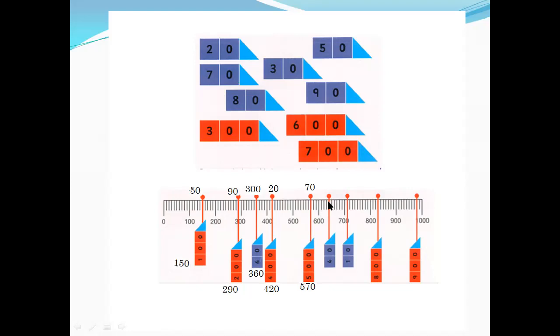600, 600 plus what? 1, 2, 3, 4 means 40. 640. We have 40 but 600 is missing. So just write 600 up and 640 down.